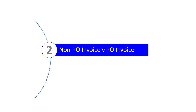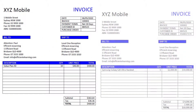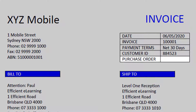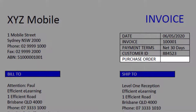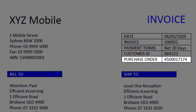So we've established where Transaction FB60 fits in the Procure2Pay process. Now let's discuss the difference between a non-PO invoice and an invoice referencing a purchase order. Here's the two documents side-by-side. Visually, the only real difference is the Purchase Order field. For a non-PO invoice, this field is blank. Conversely, for an invoice referencing a purchase order, the field is populated with the relevant purchase order number.